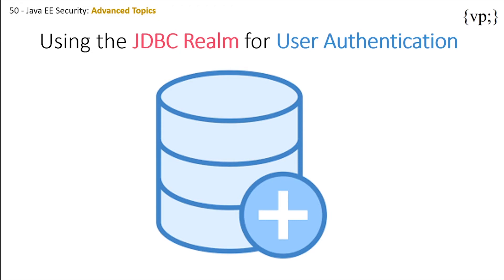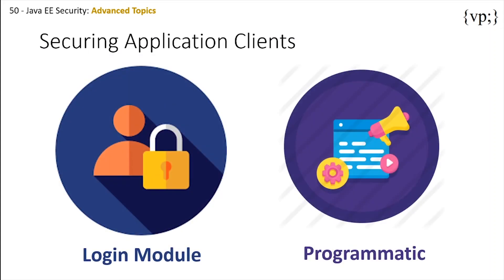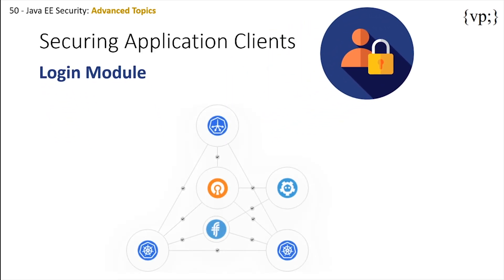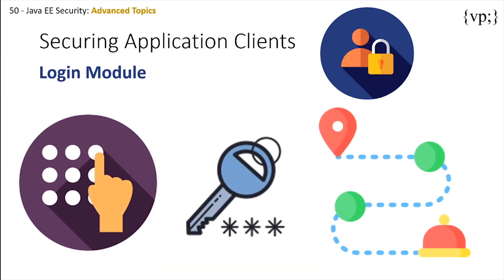We'll be using GlassFish server's own authentication realm, the file realm. An application client makes use of an authentication service provided by the application client container for authenticating its users. An application client can provide a class called a login module to gather authentication data, or you can authenticate programmatically as well. An application client uses the Java Authentication and Authorization Service, or JAAS, to create login modules for authentication. A login module uses the callback handler to both gather input such as passwords or smart card PINs from users, and to supply status information back to users.